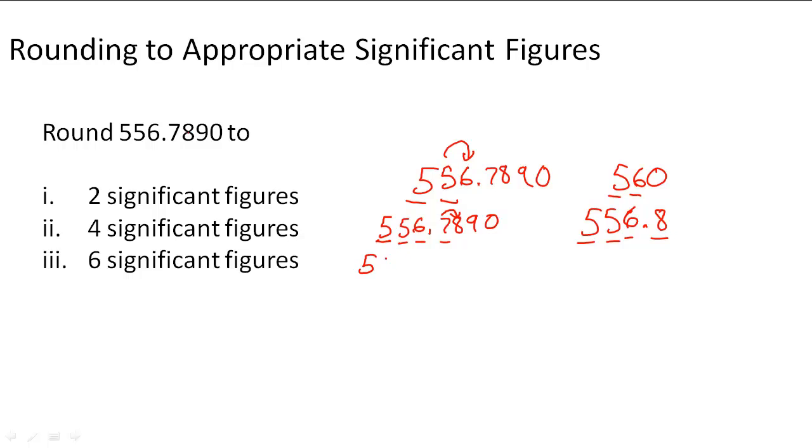Then we need six significant digits. We do the same thing, going to the sixth significant digit: one, two, three, four, five, six. Now we use the next number, which is zero.